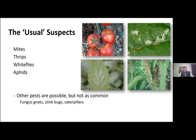So, what are the usual suspects? To round up the usual suspects: the usual suspects we have for high tunnels are going to be mites — several different species — thrips, a couple of different species, whiteflies, two different species, and aphids. In reality, almost anything that shows up in the field can show up in the high tunnel.